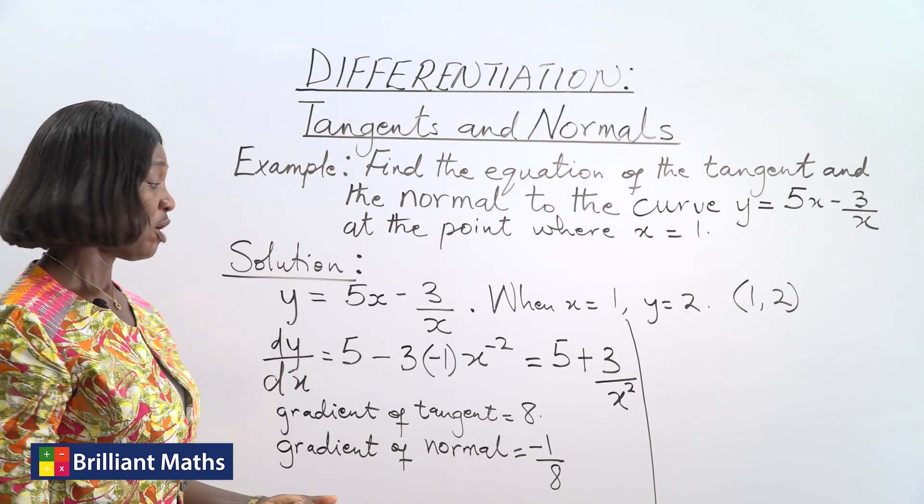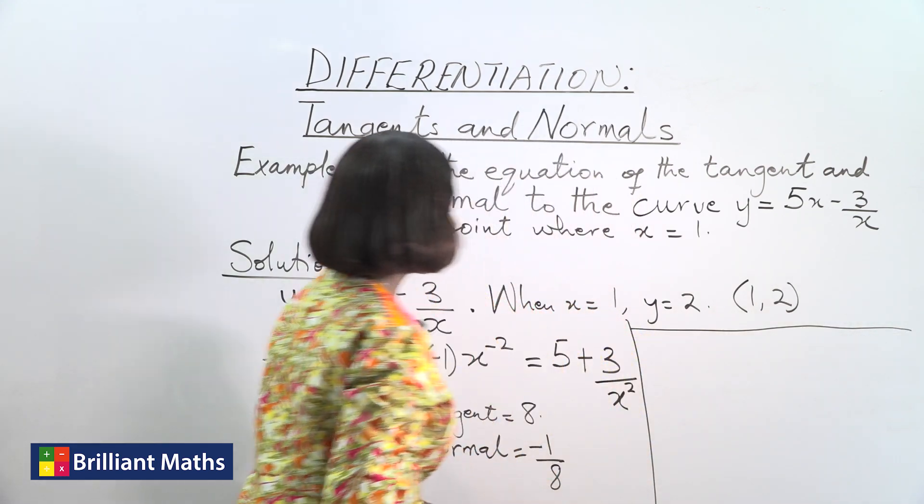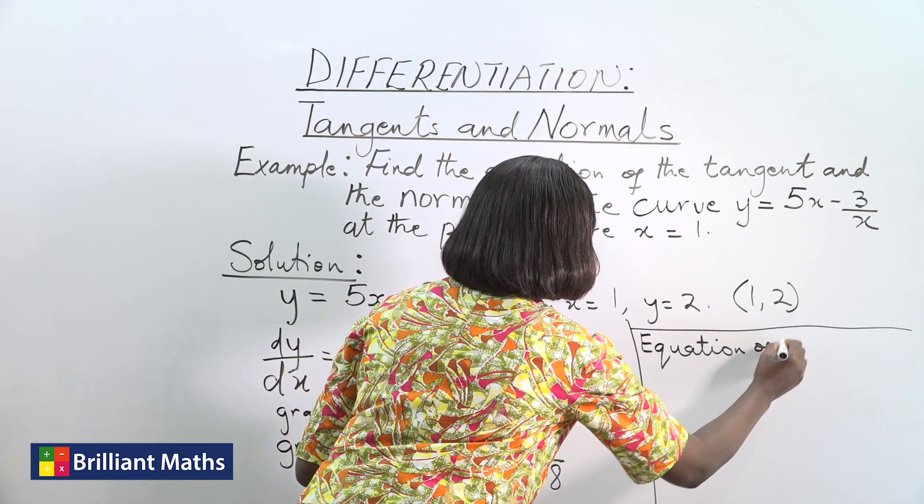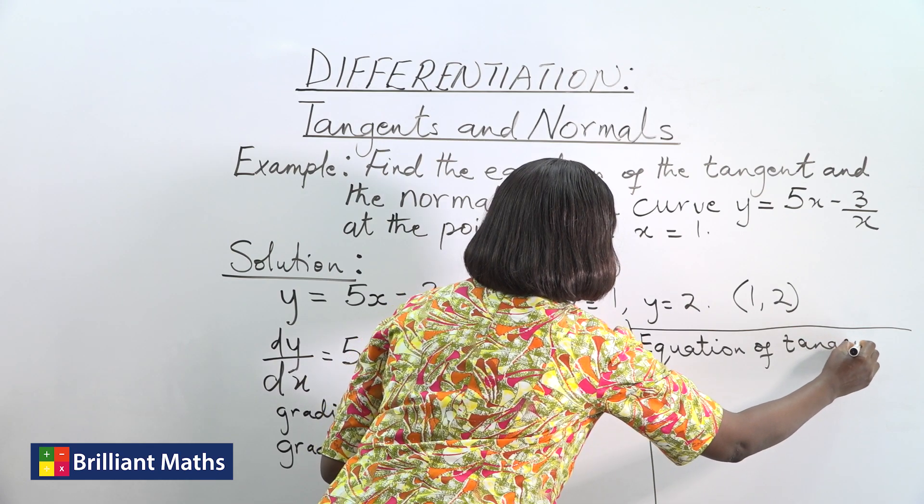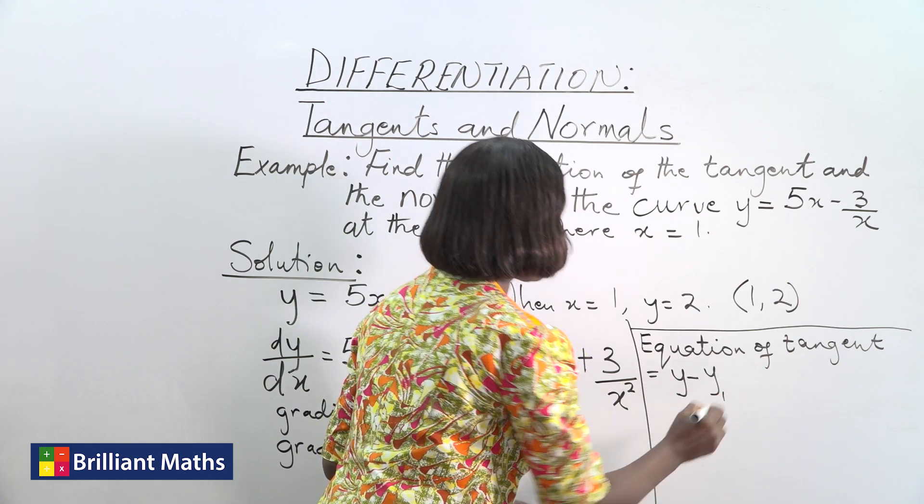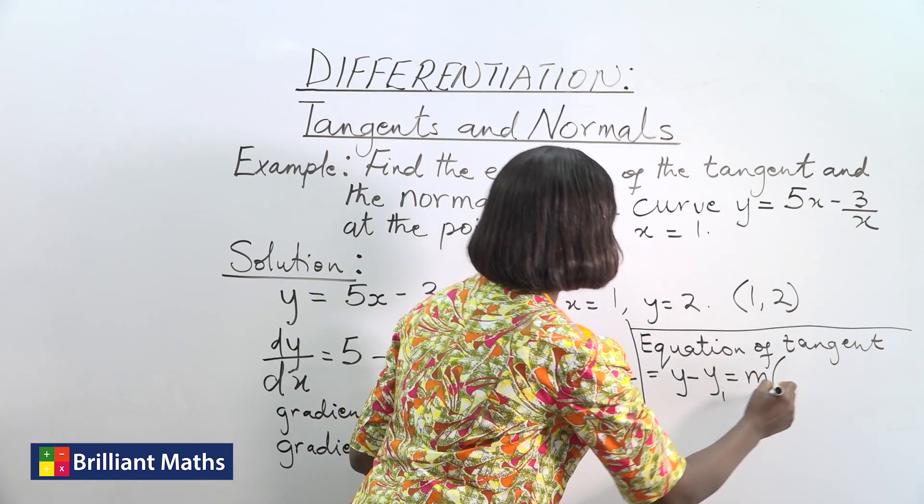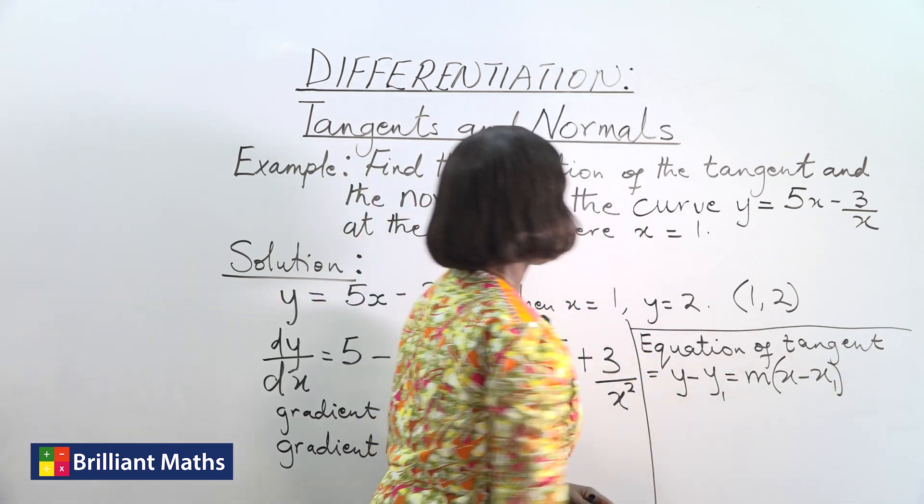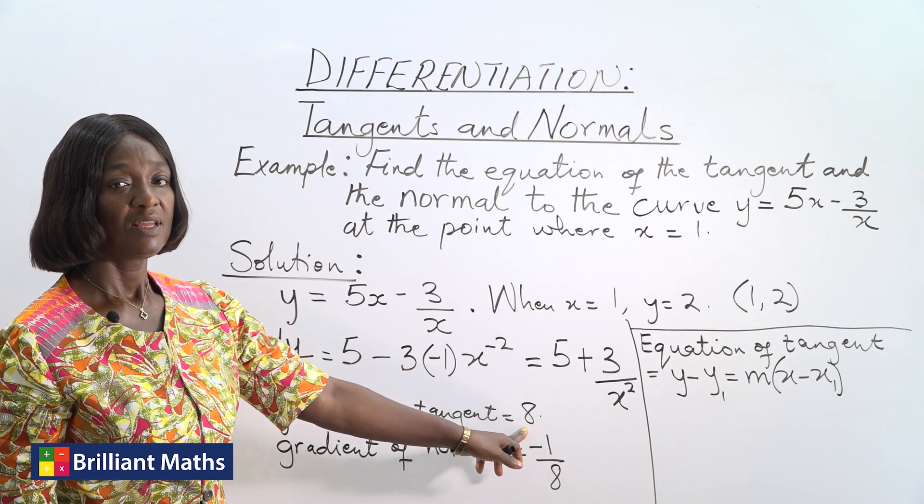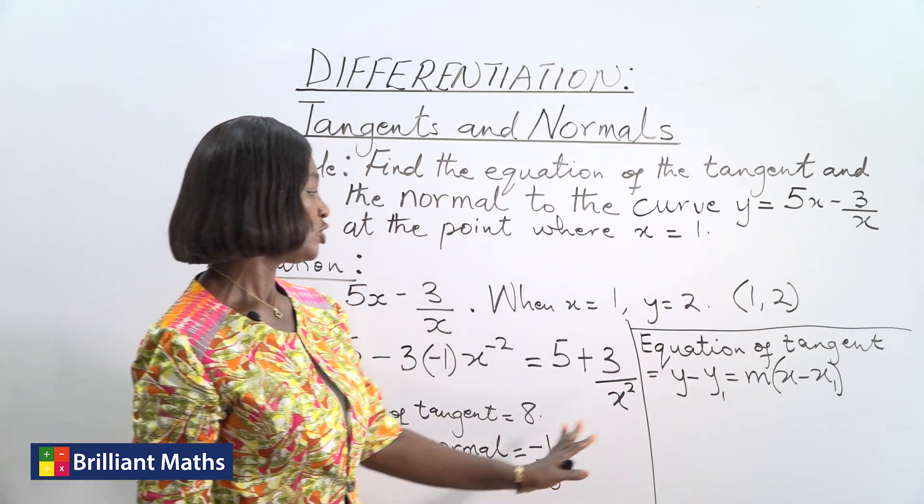So let's then finally write out the equation of the tangent and the equation of the normal using the gradients. Equation of tangent will be y - y₁ = m(x - x₁). Now our gradient for the tangent is 8. The point is x = 1 and y = 2. So we're going to substitute that into this.